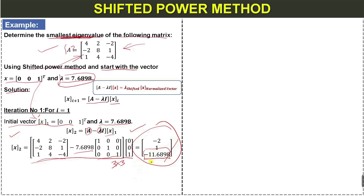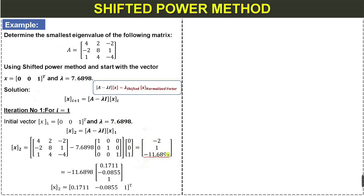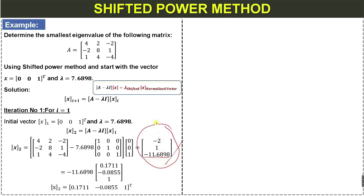This gives us the eigenvalue of the shifted matrix and the normalized vector. When we multiply the shifted matrix with the vector, we get lambda_shifted and the normalized vector x. To normalize, we take the absolute values of all components (making them positive), find the largest value, take it as a common factor, and divide the vector by that largest value to obtain the normalized vector.